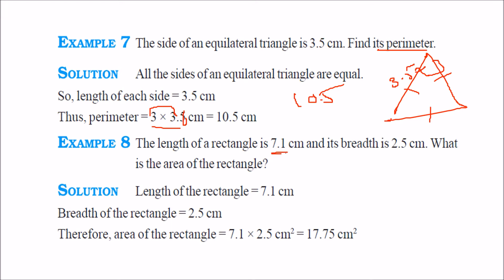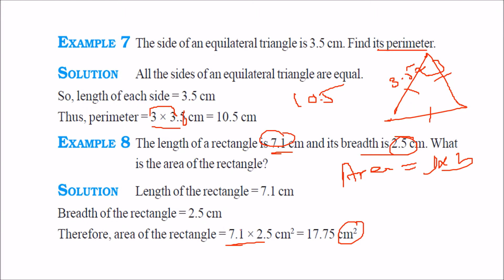The length of a rectangle is 7.1 centimeter and breadth is 2.5 centimeter. Area is length into breadth, so 7.1 into 2.5. You get the answer in square units. 71 into 25 is 1775. Because there are two values after decimal — 1, 2 — you place the decimal to get 17.75 square centimeters.